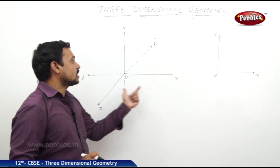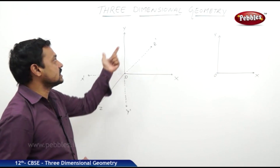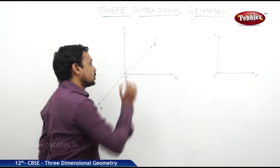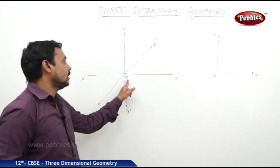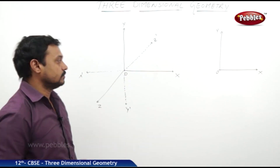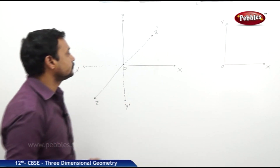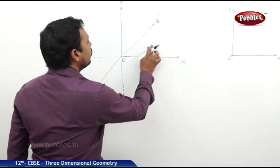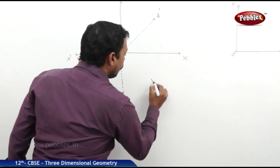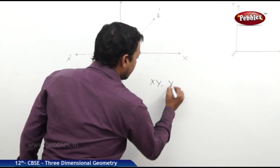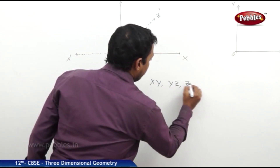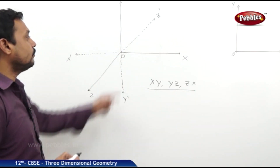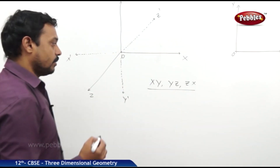These are the three coordinate axes in three-dimensional geometry, all passing through the same point known as origin, denoted by O. We already know there are three coordinate planes: xy, yz, and zx. These are the three coordinate planes of three-dimensional geometry.